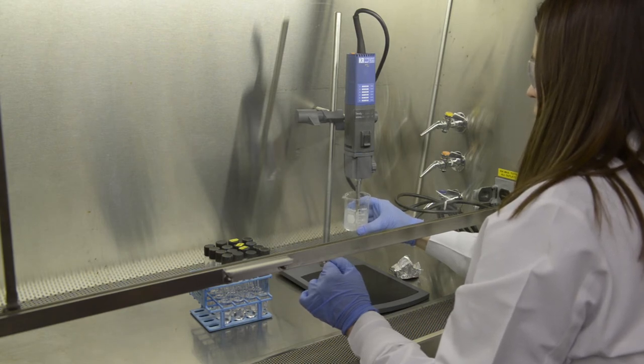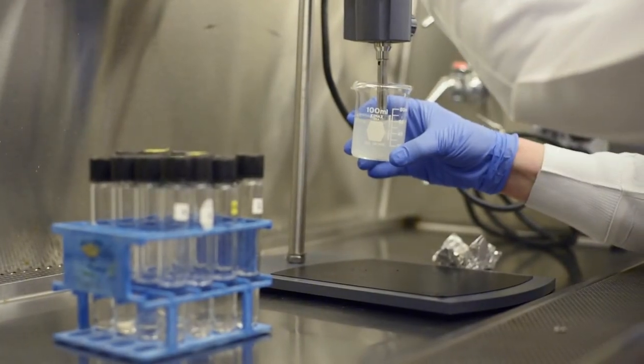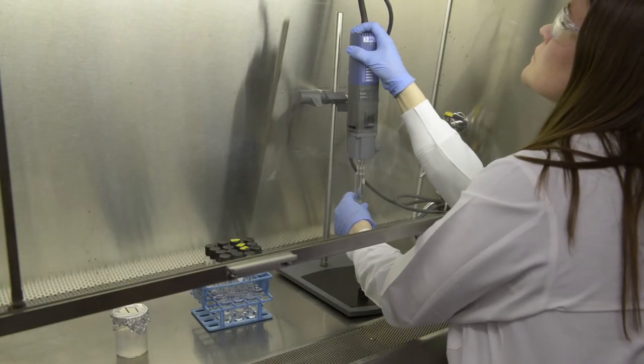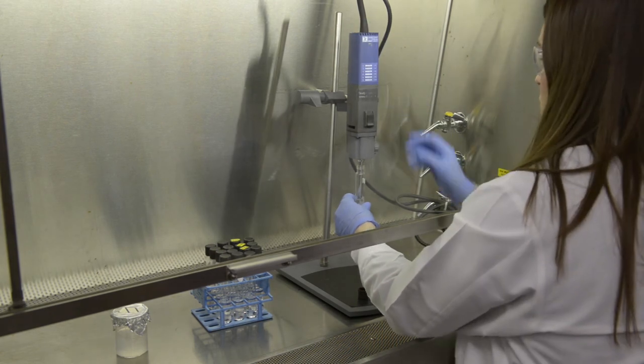If more than one sample will be processed, use a new disposable probe or clean the probe between samples as follows. Homogenize a 9 milliliter sterile dilution blank for 30 seconds.